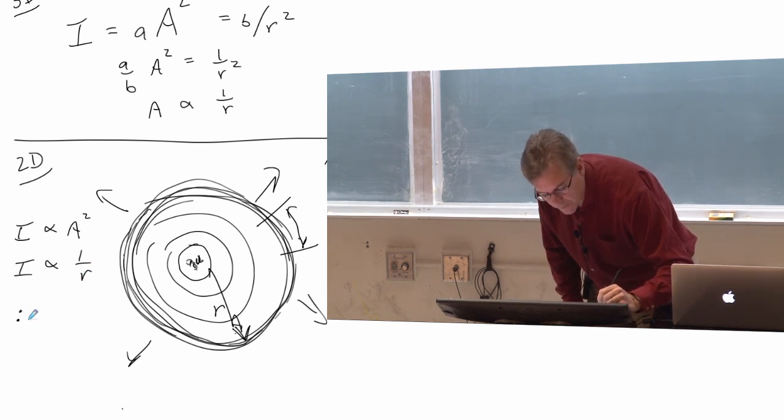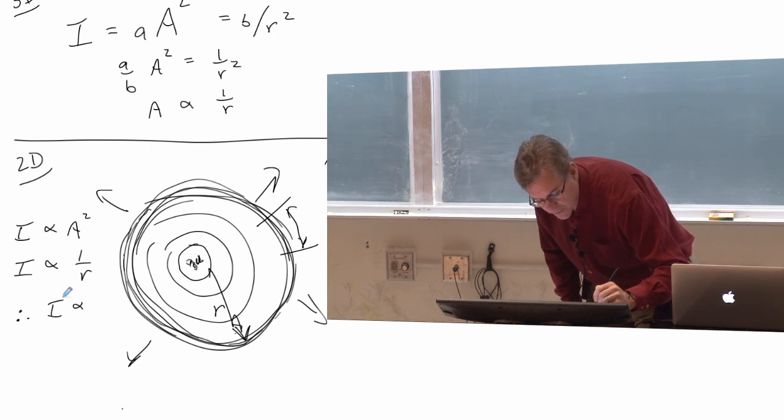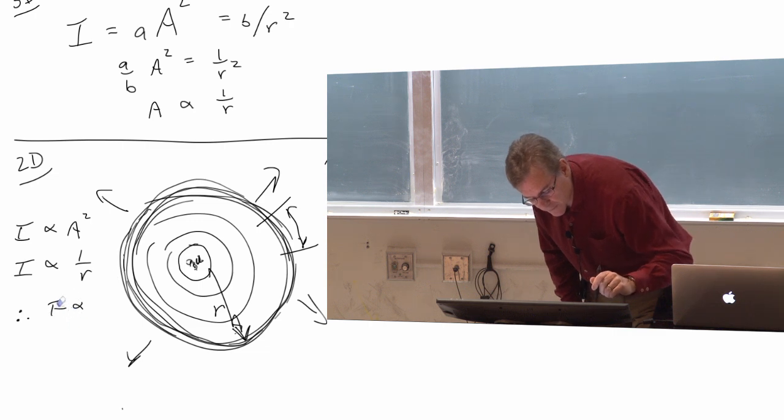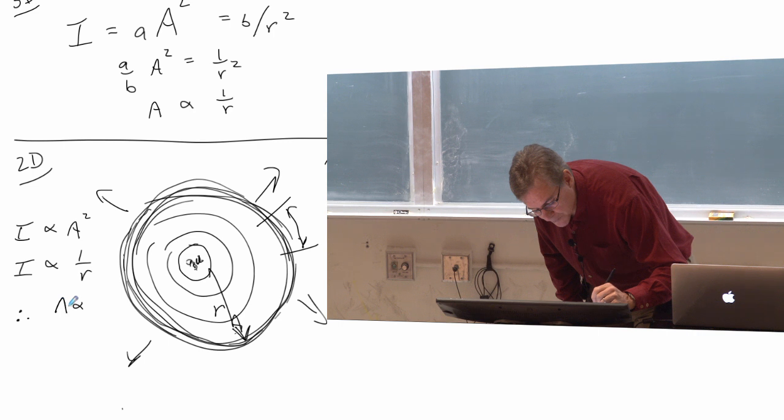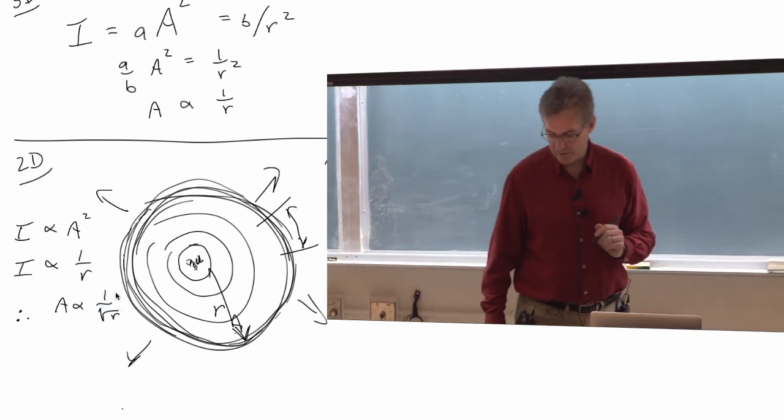And therefore, the intensity is proportional, sorry, the amplitude is proportional, I can actually erase that. Yay. The amplitude is proportional to 1 over square root of r in this case, in the two dimensional case.